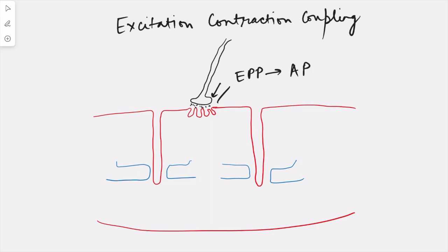This action potential, that is the electrical activity on the muscle membrane, leads to the generation of mechanical activity. Excitation-contraction coupling is basically the coupling between the excitation — that is the action potential on the muscle membrane — with the contraction, that is the mechanical activity of the muscle.